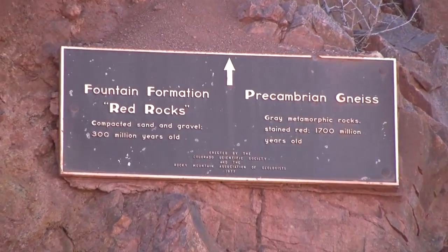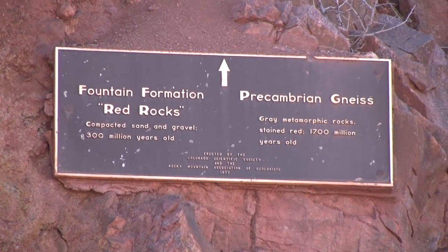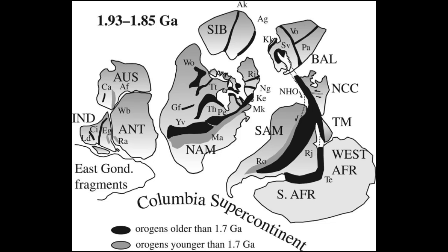Tectonically, the right side of this contact represents a time when the supercontinent Columbia was forming, as the proto-continents of Ur, Nena, and Atlantica came together along with newly formed volcanic arcs. We, on the North American continent, were on Nena, which literally is an anagram of Northern Europe, North America.